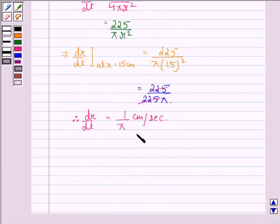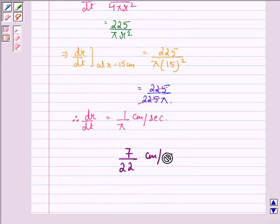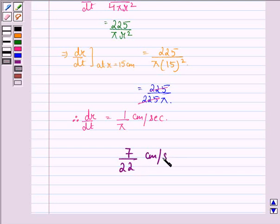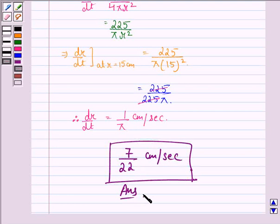So our answer to this question is 7/22 cm per second, since π is approximately equal to 22/7. I hope you understood the solution and enjoyed the session. Have a good day.